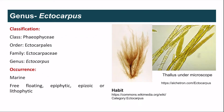Ectocarpus belongs to class Phaeophyceae, order Ectocarpales, family Ectocarpaceae, and genus Ectocarpus. Ectocarpus is marine, found in seawater. It may be free-floating or epiphytic, that is attached to other aquatic plants. It may be epizoic, attached to other aquatic animals like the fins of fish, or lithophytic, that is attached to rocks found in the sea.